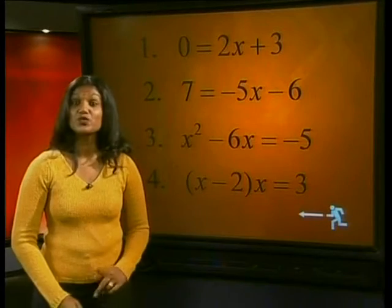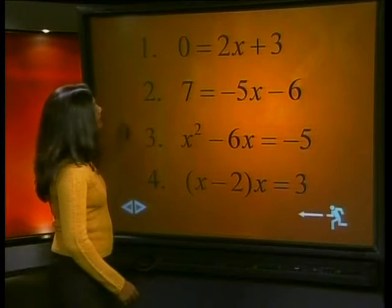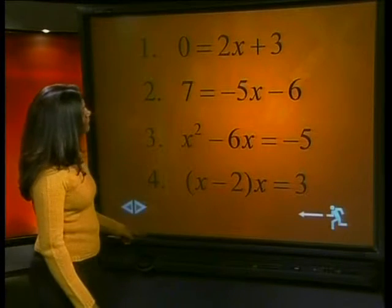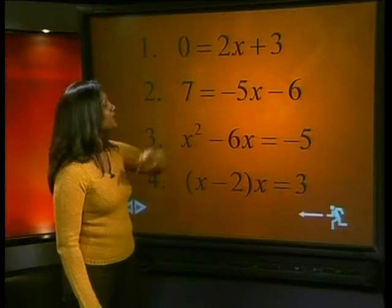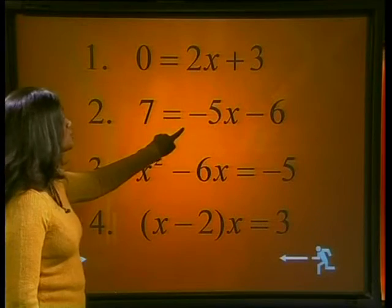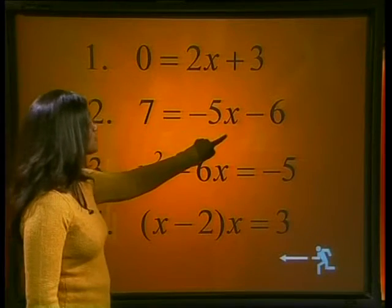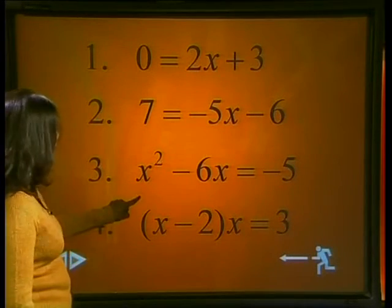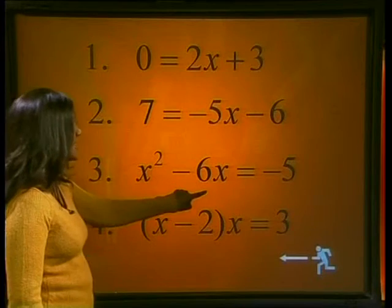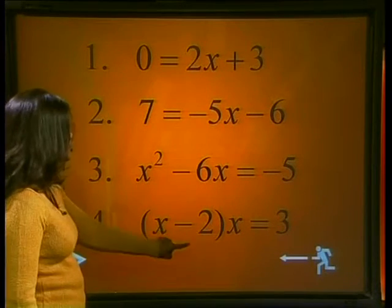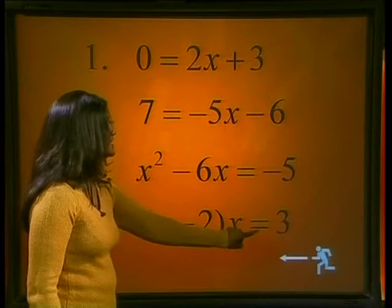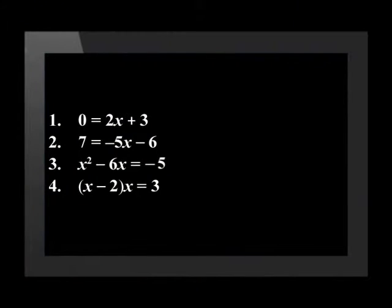Let's start with a reminder. Here are several equations: 0 is equal to 2x plus 3; 7 is equal to minus 5x minus 6; x squared minus 6x is equal to minus 5; x minus 2 multiplied by x is equal to 3. Now which of these do you think are quadratic equations?